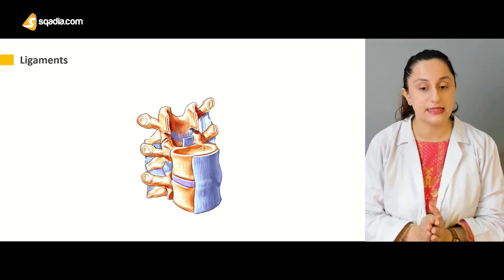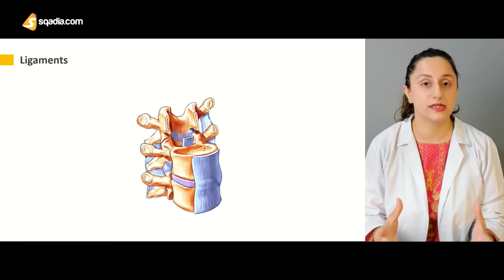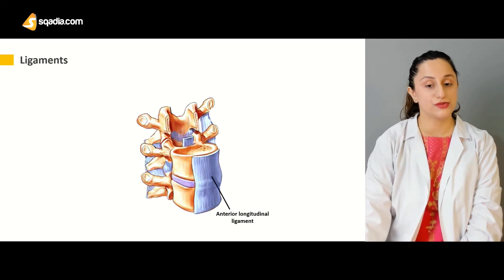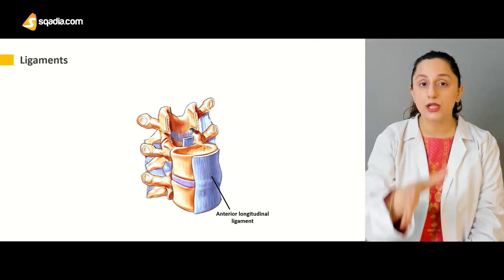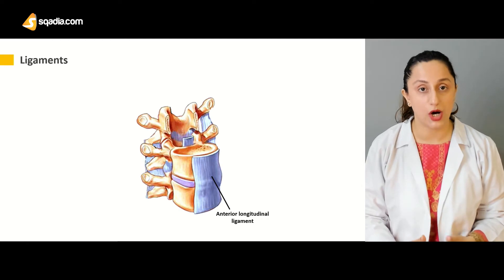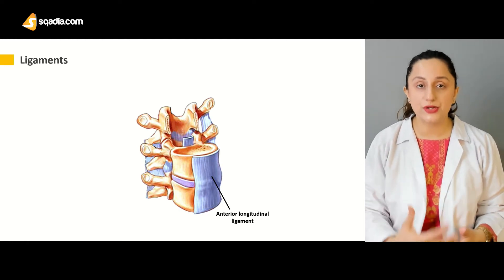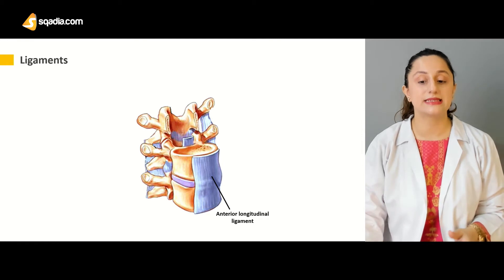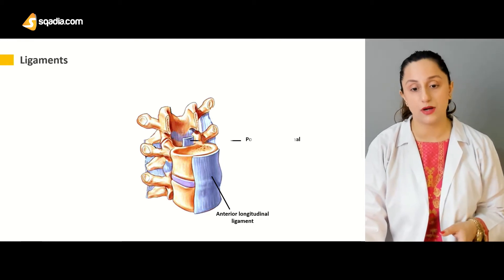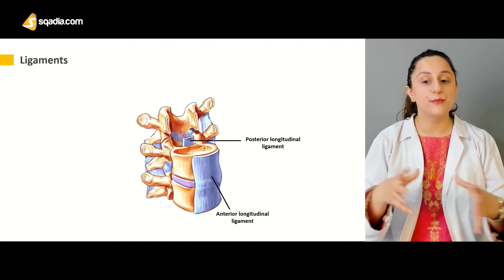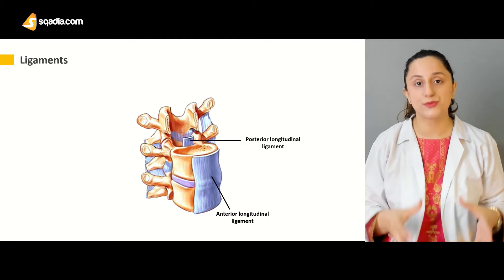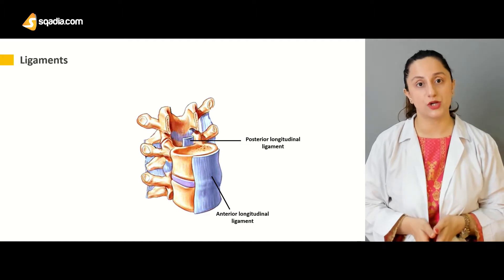The major ligaments attached to the vertebral column are the anterior longitudinal ligament, which runs along the anterior bodies of the vertebral column — so anteriorly along all of the vertebral bodies throughout the vertebral column. And then we have the major posterior longitudinal ligament, which is attached posteriorly to the vertebral bodies throughout the vertebral column.